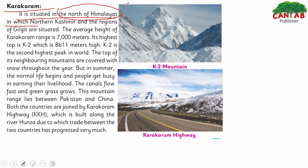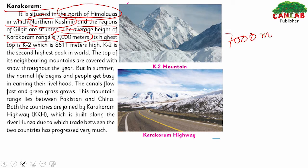The Karakoram is situated to the north of the Himalayas. In this range, Azad Kashmir and the regions of Gilgit are situated. The average height of the Karakoram ranges is 7,000 meters. The highest peak in the Karakoram is K2, which is the second highest peak in the world at 8,611 meters.